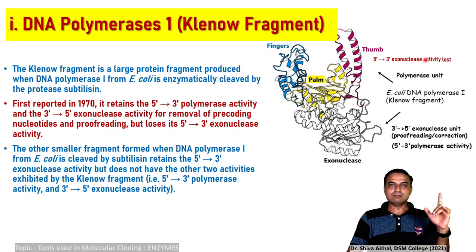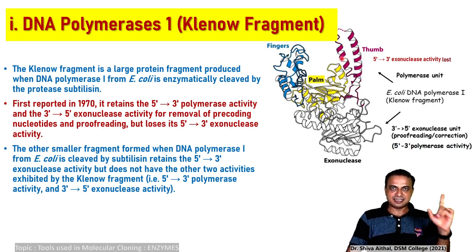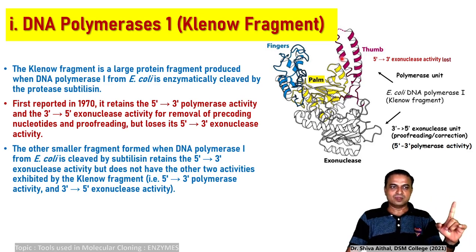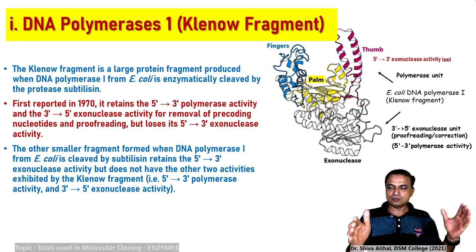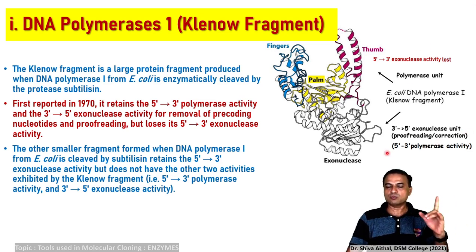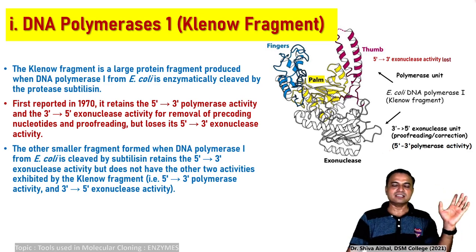The Klenow fragment was first discovered in 1970, and it is named after the scientist. The other small fragments formed when DNA Polymerase 1 is cleaved retain only two activities: 3' to 5' exonuclease and 5' to 3' polymerase activity. The product formed is called the Klenow fragment.